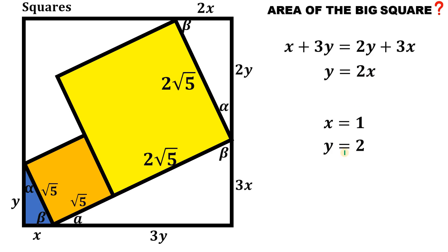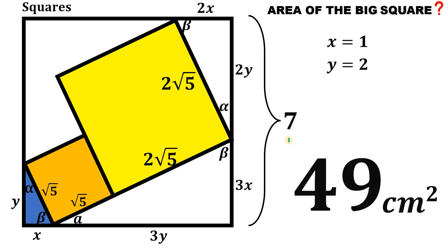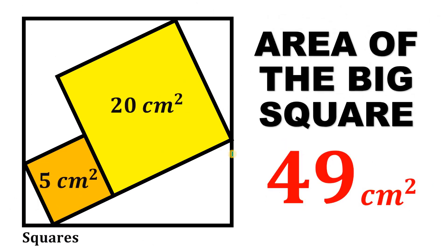At this point, we can now find the side length of our big square. On the first side: 2y plus 3x equals 2 times 2 plus 3 times 1, which is 4 plus 3 equals 7. On the other side: x plus 3y equals 1 plus 3 times 2 equals 1 plus 6, which is also 7. Therefore, the side length of this big square is simply equal to 7 centimeters. Therefore, the area is just 7 squared, which equals 49 square centimeters. And that is the area of the big square.